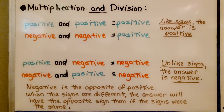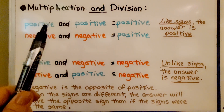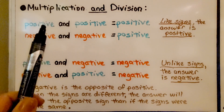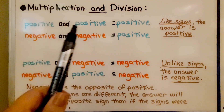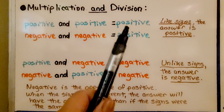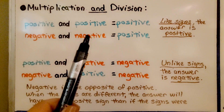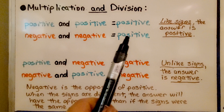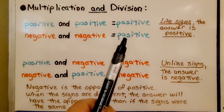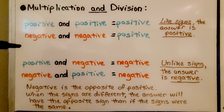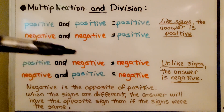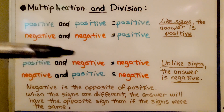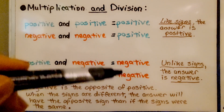But here's where it's different. For multiplication and division, when we multiply a positive and a positive, or divide a positive by a positive, our answer is going to be positive — they have like signs, so the answer is positive. And negative times negative, they have like signs, so the answer is positive, whether it's the product or the quotient. When they have unlike signs, the answer is negative. It doesn't matter which one's positive and which one's negative — if they have unlike signs, the answer is going to be negative.